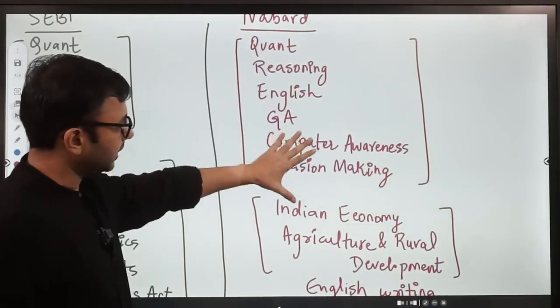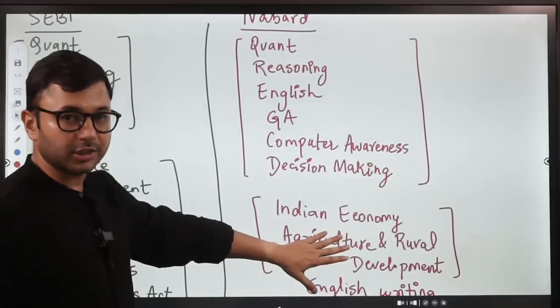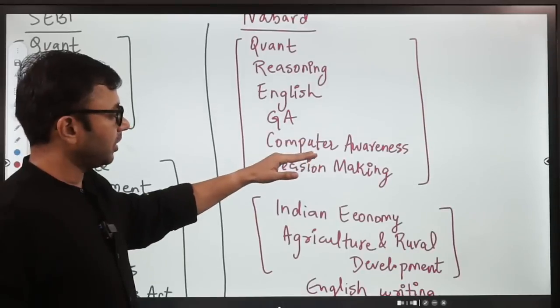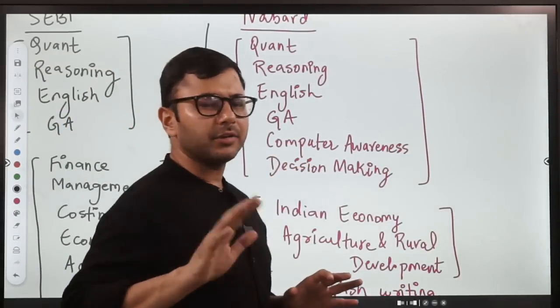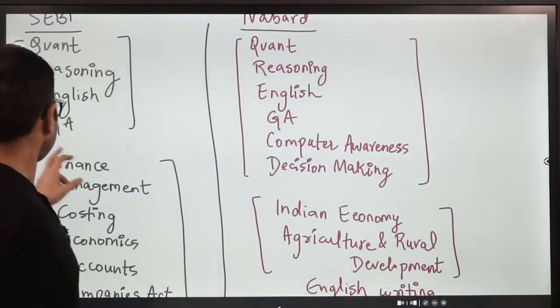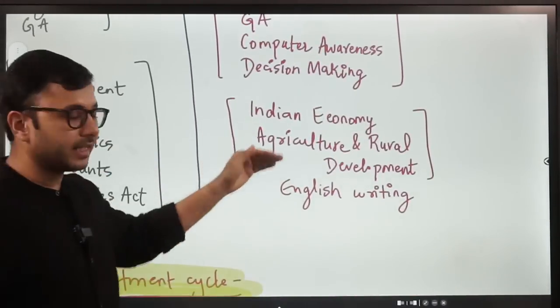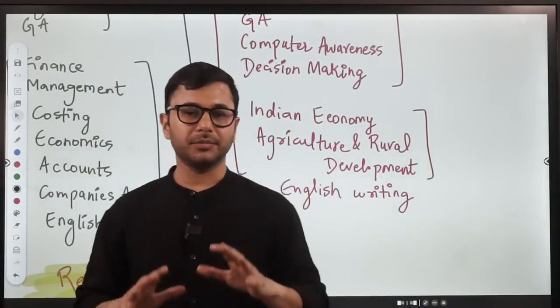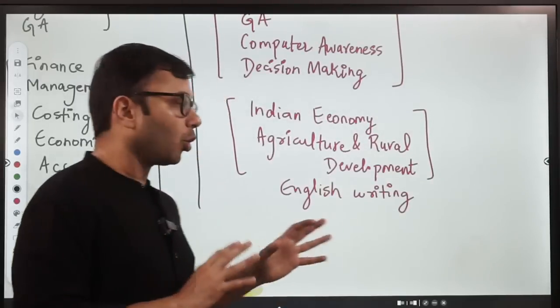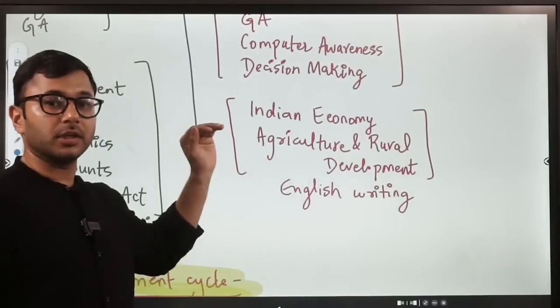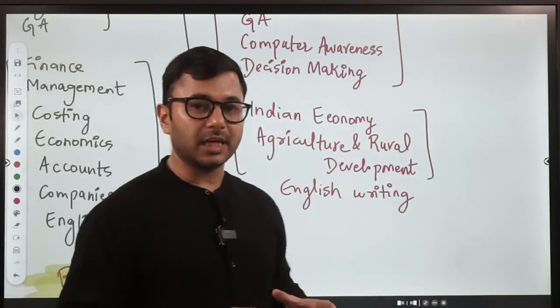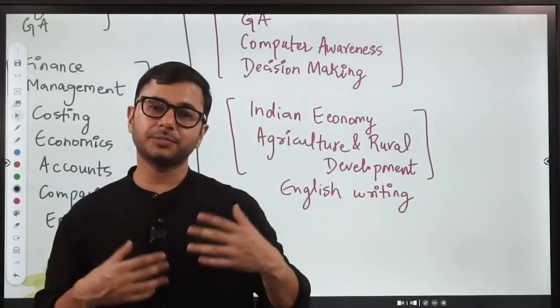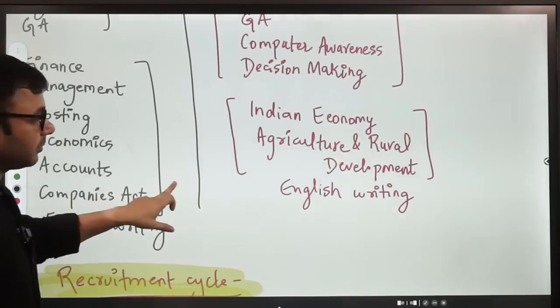Let's come to NABARD. NABARD में, again, these are qualifying, these are merit sections. इसमें बस आपको minimum marks लाने होते हैं. In addition to Quant, Reasoning, English, GA, we also have computers and decision making, जो कि बहुत average level का आता है, बहुत जादा difficult नहीं होता है. In addition, we have Indian Economy, Agriculture and Rural Development and English Writing, which is very similar to what is asked in RBI examination as well. तो बहुत overlap है तीनों exams में, plus there is a big overlap between these exams and banking, plus there is a big overlap between these exams and UPSC. So, if you are a UPSC aspirant, तभी भी ये exams काभी attractive हो जाते हैं.